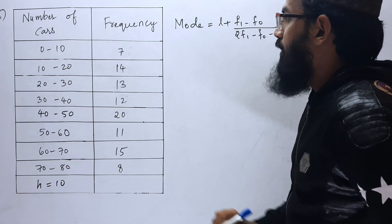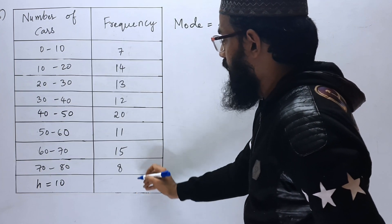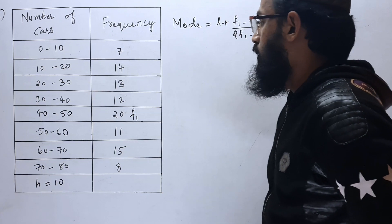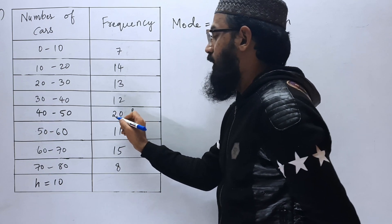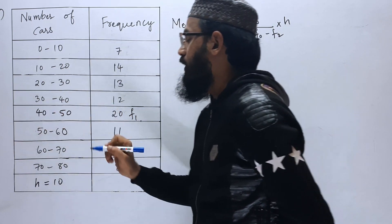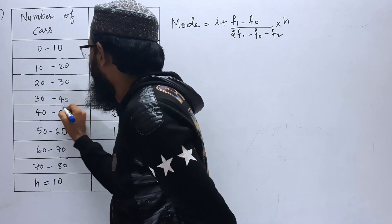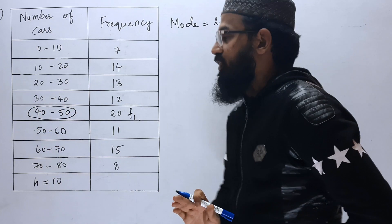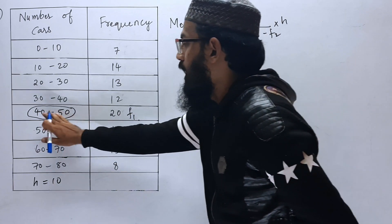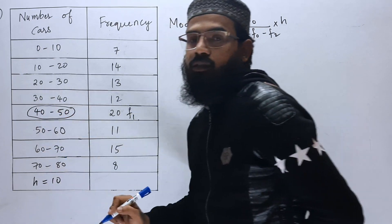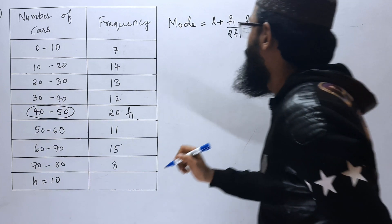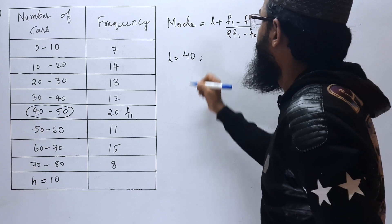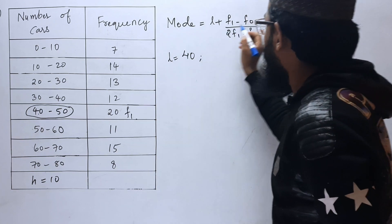Next, F1. F1 is the highest frequency, that is 20. In front of this 20, we are having 40 to 50. This is called modal class. Modal class is 40 to 50. In this modal class, the lower boundary, that is the lower limit, that is nothing but 40. So L is equals to 40.